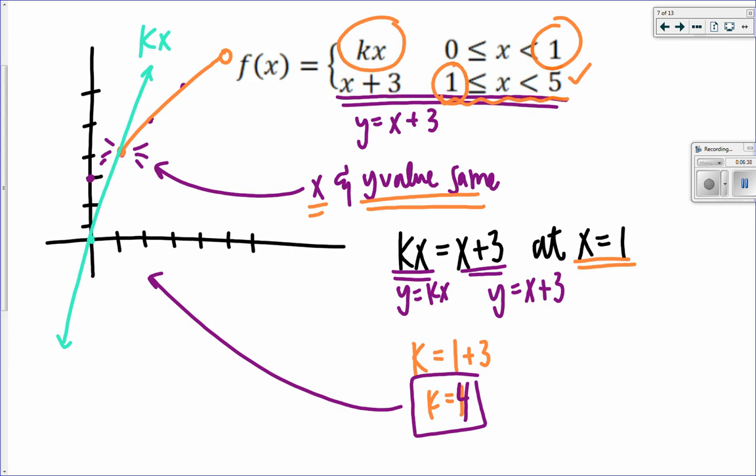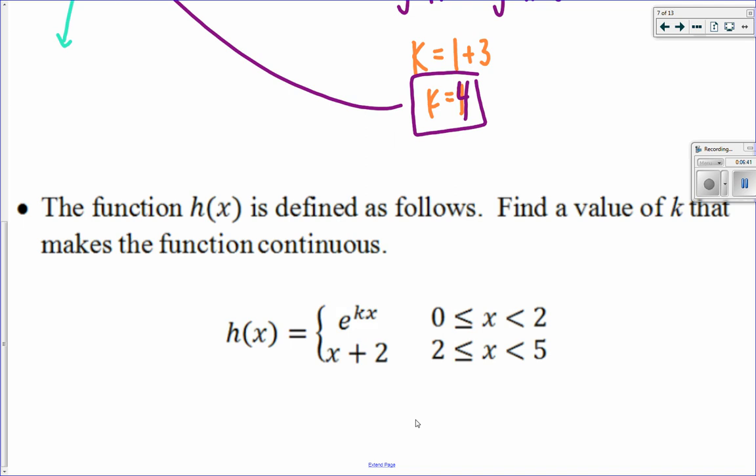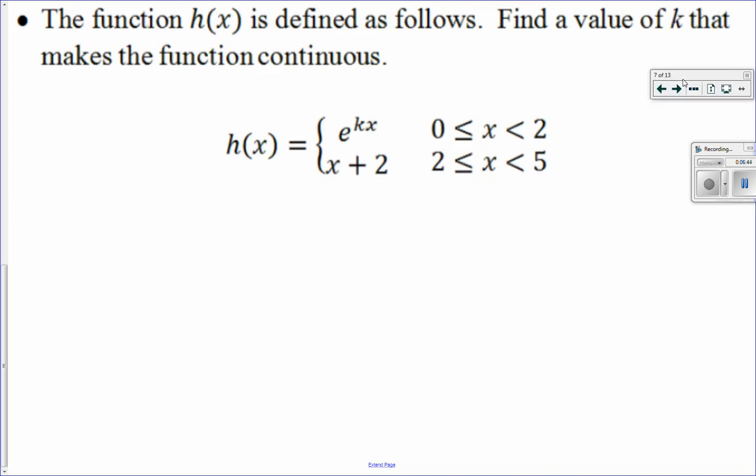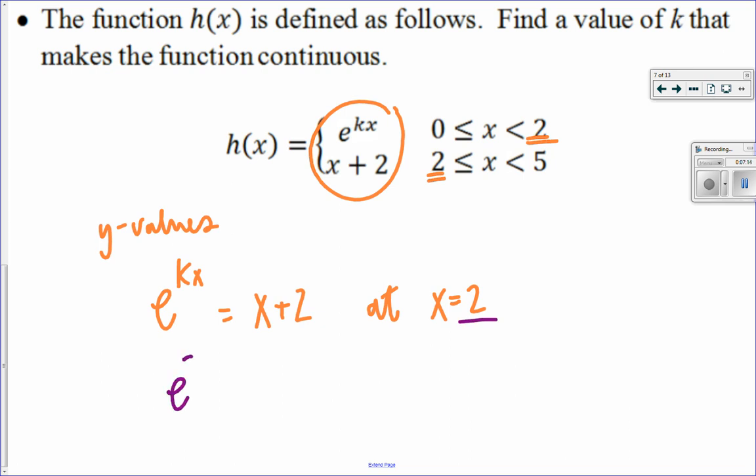Well, let's try this again with a maybe more challenging example. What about a function that looks like this? It says, our function is defined as follows. Find a value of k that makes the function continuous. Well, we're going to do the exact same thing. We need our x and y values the same. So we start to make the y values the same by setting these equations equal to each other. e to the kx is equal to x plus 2. Specifically, where do we want this to happen? Where they meet at x equals 2. So I can continue by plugging in 2. So I have e to the 2k is equal to 2 plus 2.